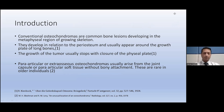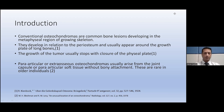To brief up, osteochondroma is a very common lesion — it's a benign bony lesion. It usually develops around the metaphyseal region and is seen in a growing skeleton. They have a relation close to the periosteum and usually appear around the growth plate in the long bones, which is why it's typically seen in the growing population.